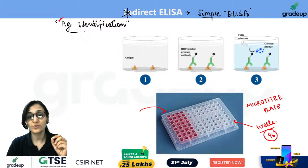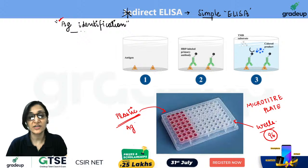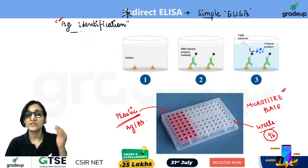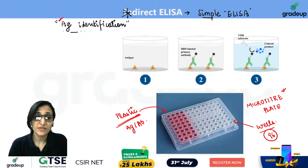Antigen will be coated on this plate. The plate has certain special properties — it is made of plastic, and the material is such that it can easily absorb antigen or antibody on its surface. It will attach antigen or antibody to itself. So, this microtiter plate will be used in all types of ELISA we study.